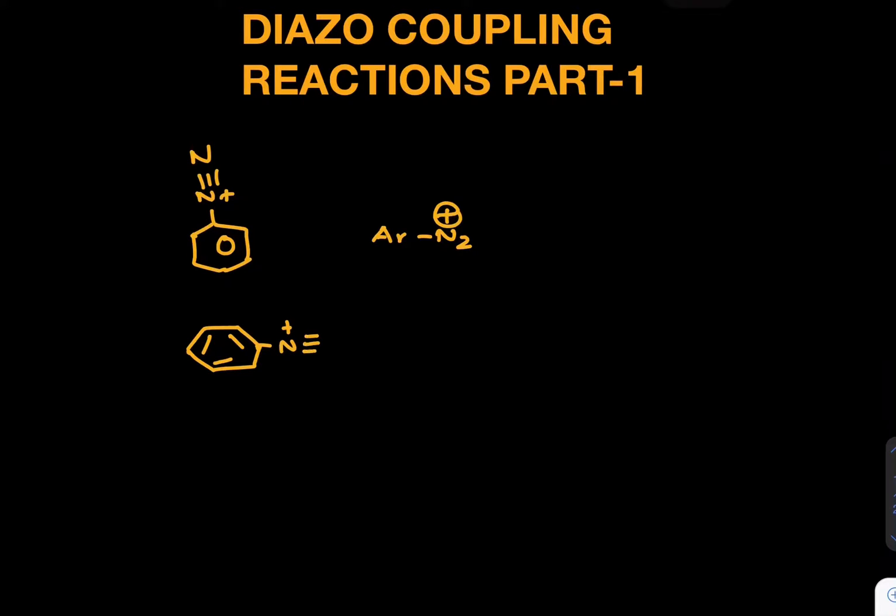This is another way to write it. As you can see here in this structure, when you draw N plus triple bond N, there is a possibility of support towards N plus. Hence, the demand of any attack of nucleophile on this particular thing is reduced because it is getting support from the ring. Hence, we call it a weak electrophile.